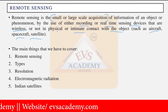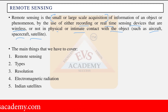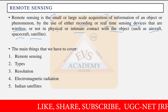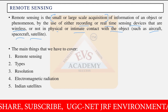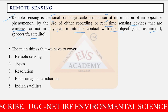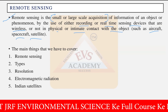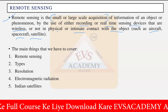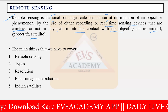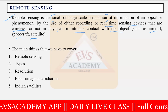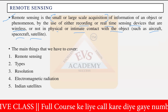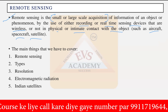The main things we will cover in this chapter include: the definition of remote sensing, types of remote sensing, what resolution means in remote sensing, how electromagnetic radiation is used in remote sensing, and the main Indian satellites from which exam questions are sometimes asked.